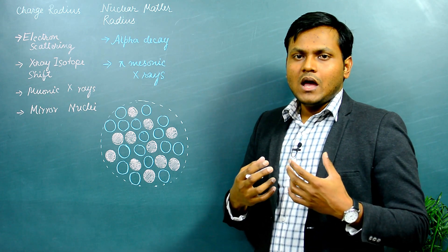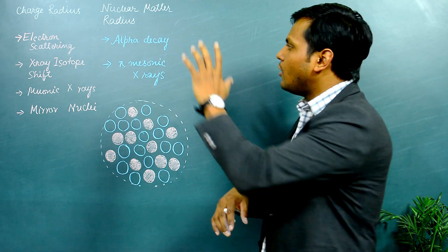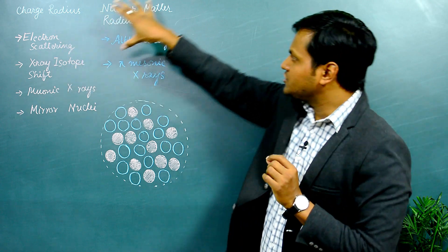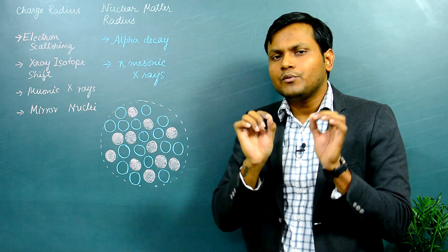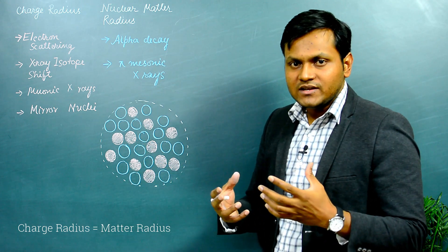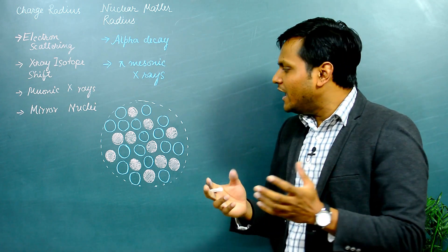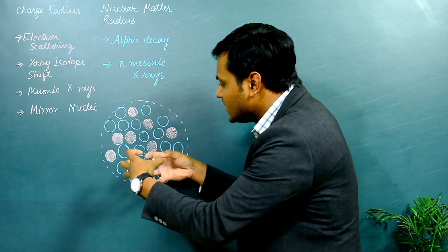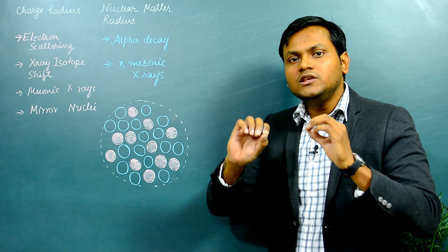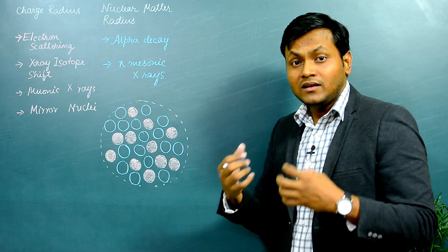One very important conclusion from these experiments was that the nuclear matter distribution and the nuclear charge distribution have approximately the same radius. This means protons and neutrons are uniformly distributed throughout the entire volume of the nucleus. It's not that protons are concentrated at the center and neutrons spread on the surface, or vice versa - both are uniformly distributed, which is why the charge and nuclear matter radii are approximately equal.